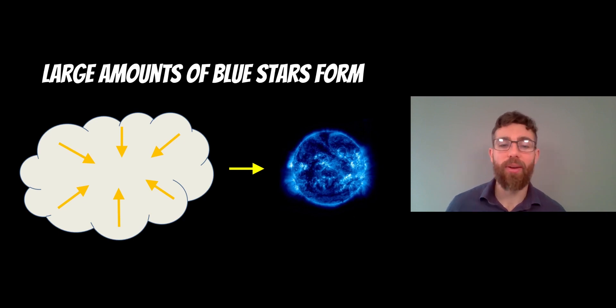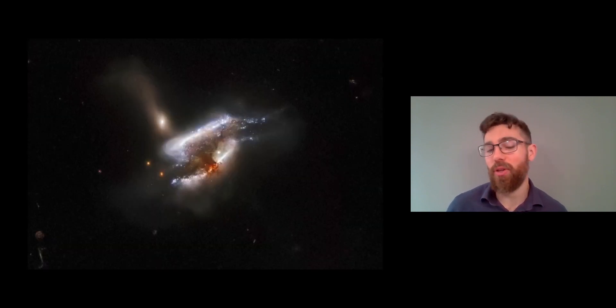So you have huge amounts of these blue stars being formed because they're gravitationally distorted, disturbed, which causes the collapse. So lots of blue stars forming.